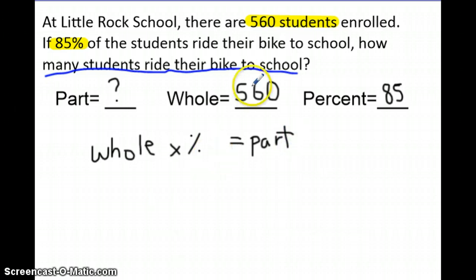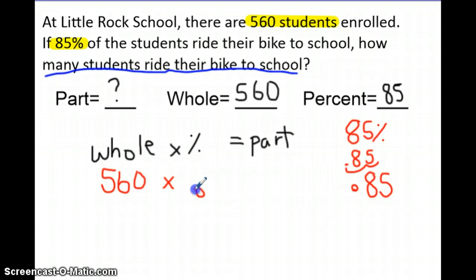Okay, so now we said the whole is 560. So we're going to represent 560 where whole is. The only problem is that this percent, we can't just write 85%. We're going to have to write it in decimal form. You should remember that 85%, in order to get it in decimal form, we take the 85 and we move that decimal two spots to the left because we're dividing by 100 technically. So 0.85 is 85% in decimal form, and if we multiply those two together, we will get our part.